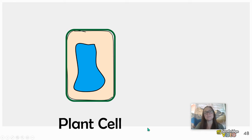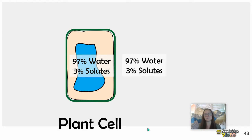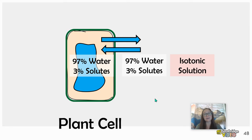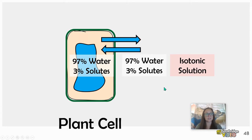Let's see what happens if you take a plant cell with the same inside — maybe 97% water and 3% solutes — and place it in a solution that has the same percentage or concentration of water and solutes as the inside. We call this type of solution isotonic. Therefore, water is still moving in and out of the cell, but it's moving at equal rates, so it's not changing the size of the cell.